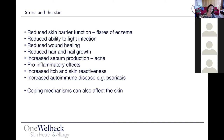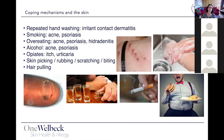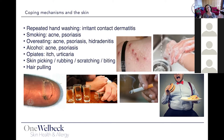Not only does stress affect the skin directly, but the coping mechanisms we use can also affect the skin. Repeatedly washing hands — as a manifestation of anxiety or pandemic behaviour — triggers irritant contact dermatitis. Smoking makes acne and psoriasis worse. Overeating plays a role in acne, psoriasis and hidradenitis. Alcohol worsens acne and psoriasis. Opiates can trigger itch and urticaria. And people pick, rub, scratch, bite their skin and pull their hair out.